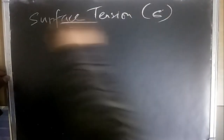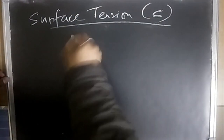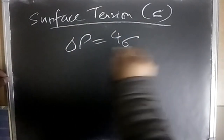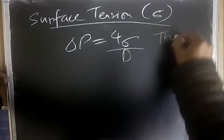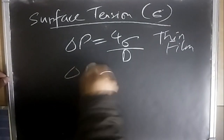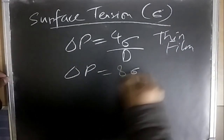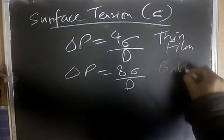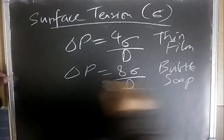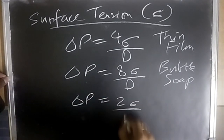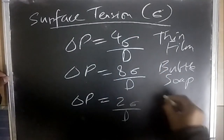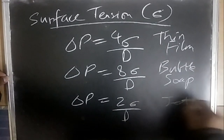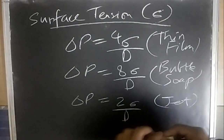The first thing we have here is surface tension, denoted by sigma. For a thin water film: ΔP = 4σ/d. For a soap bubble: ΔP = 8σ/d, which is two times that of a thin film. For a jet stream: ΔP = 2σ/d. So the values are 4, 8, and 2 for thin film, soap bubble, and jet respectively.